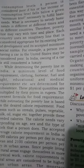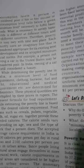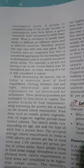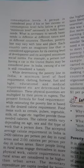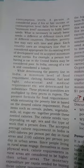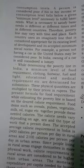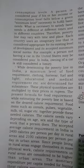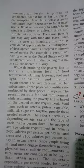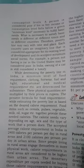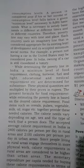A person is considered poor if his or her income or consumption level falls below a given minimum level necessary to fulfill basic needs. What is necessary to satisfy basic needs is different at different times and in different countries. Therefore, poverty lines vary with time and place.